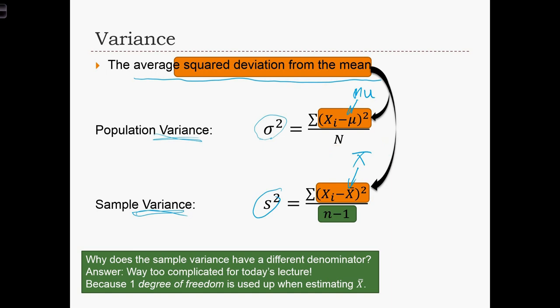There is something a little bit strange going on. When we calculate the population variance, we divide by capital N, the population size. But when we calculate the sample variance, we don't divide by just N, the sample size. We're going to instead divide by N minus 1. While this is kind of frustrating, it's unfortunately out of the scope of this class to really explain why we calculate the sample variance with N minus 1 rather than just simply N.